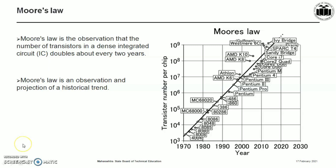Moore's law is the observation that the number of transistors in a dense integrated circuit doubles about every two years. It is an observation and projection of a historical trend, and it has been used in the semiconductor industry to guide long-term planning and to set targets for research and development. Advancements such as reduction in microprocessor costs, increase in memory capacity, improvement of sensors, and even the number and size of pixels in digital cameras are strongly linked to Moore's law.